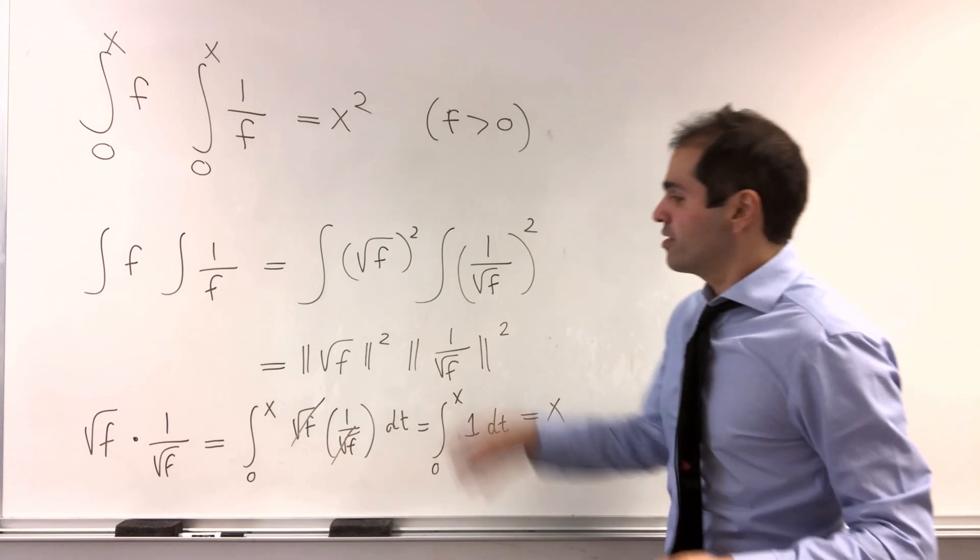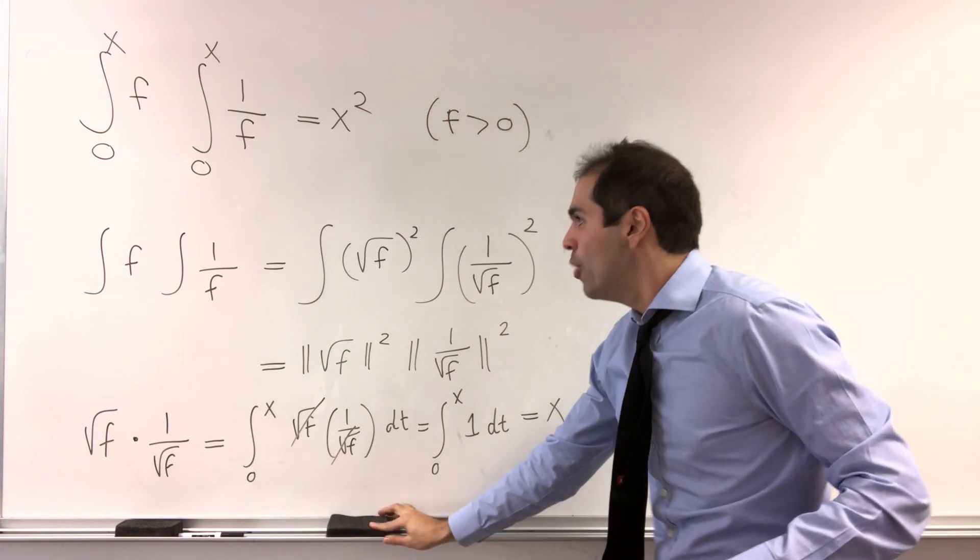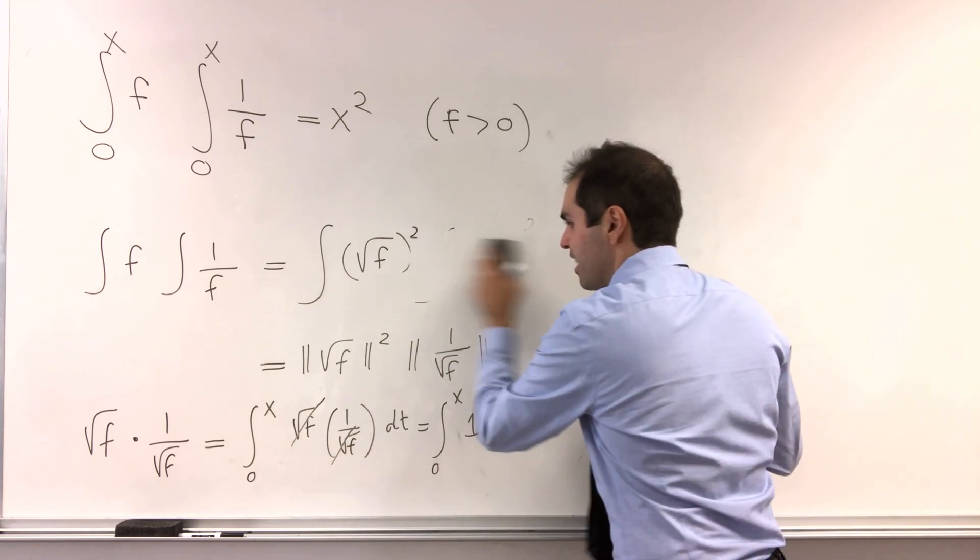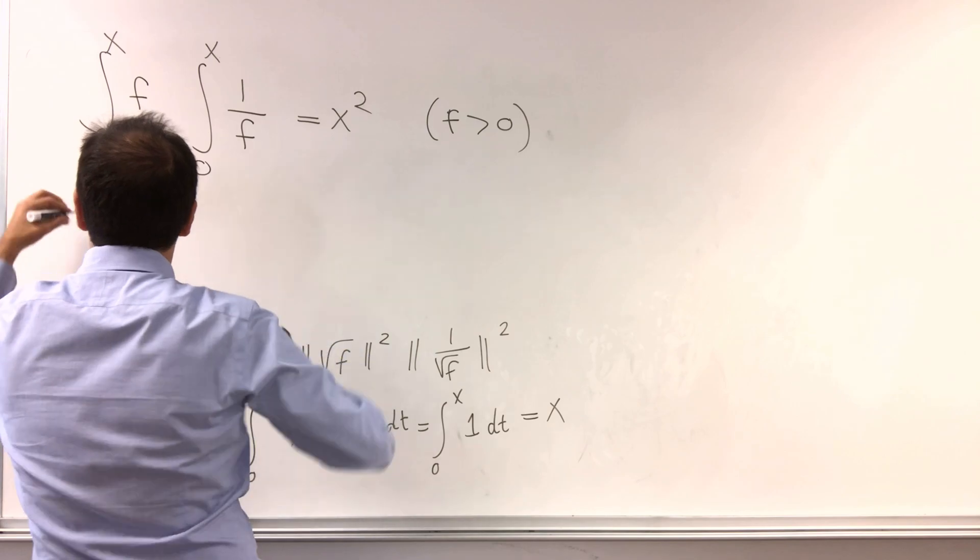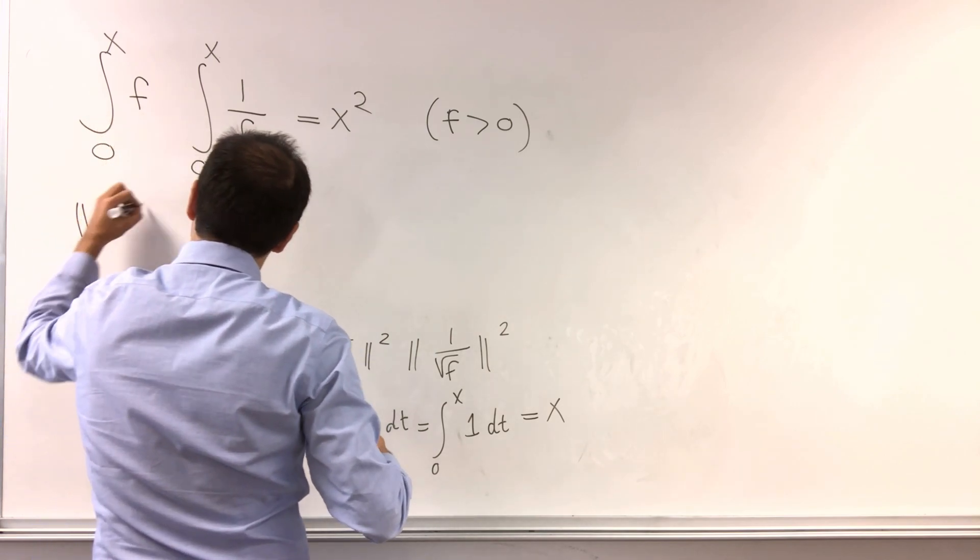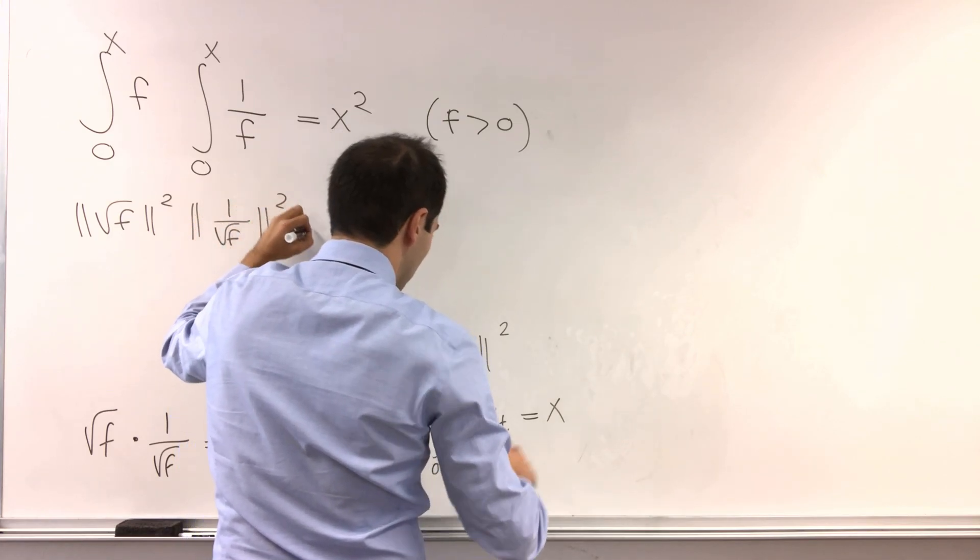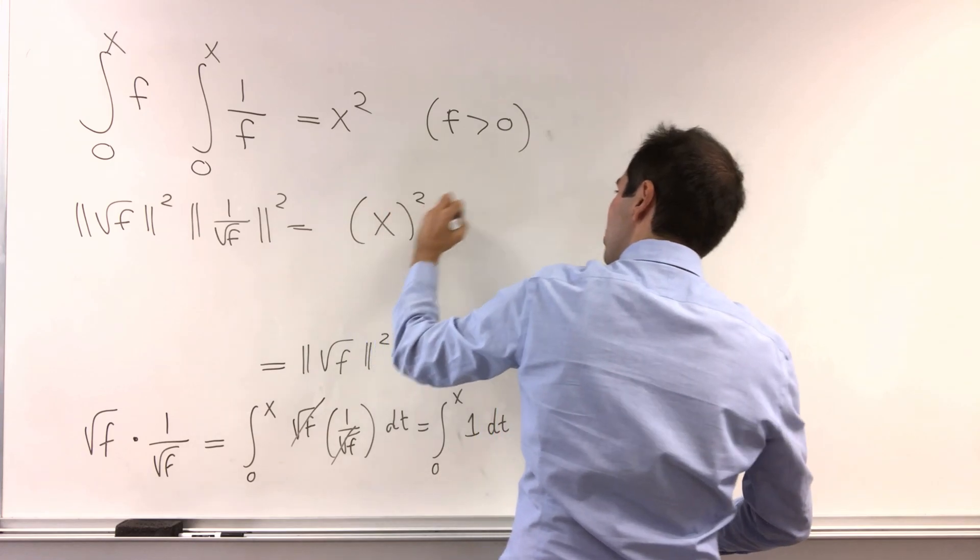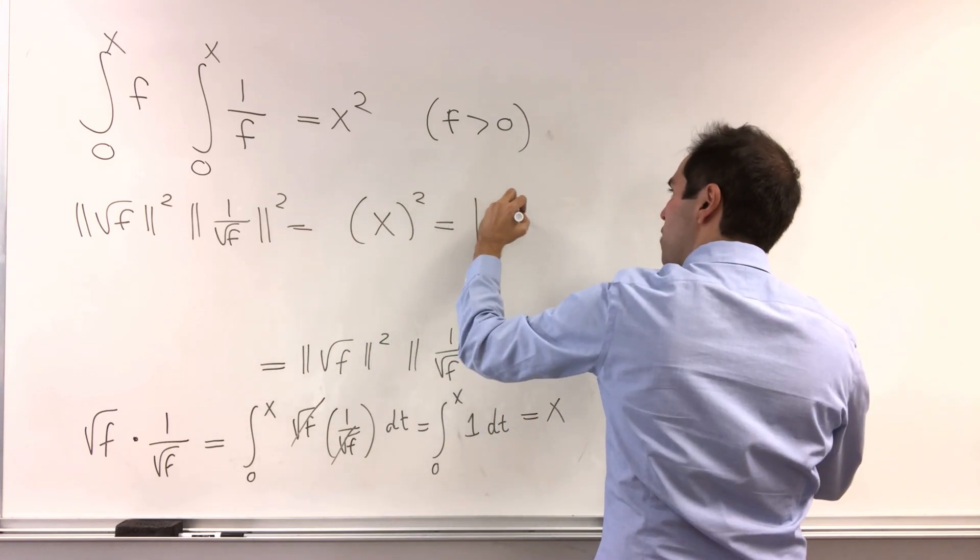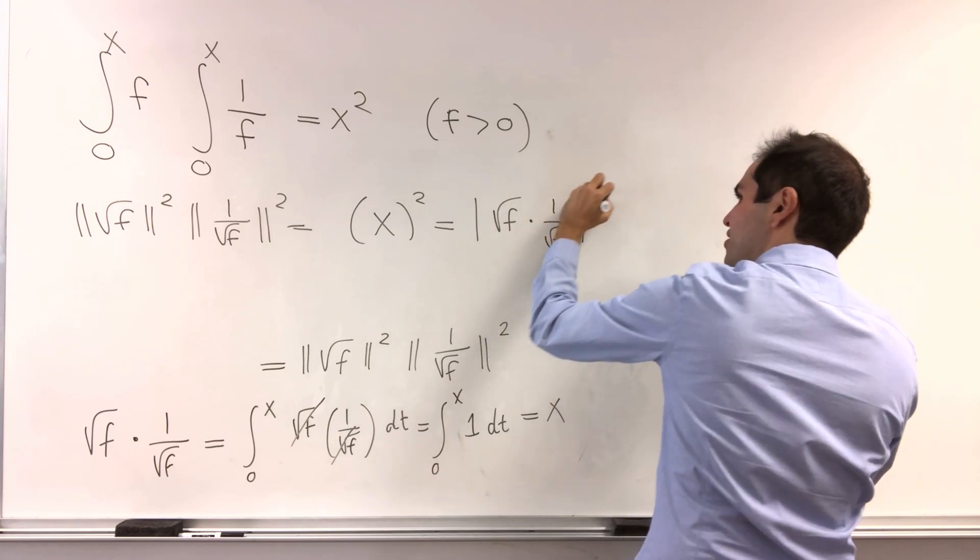In other words, what does this integral equation say? Well, it simply says that the length of square root of f squared times the length of 1 over square root of f squared is literally x squared, so the absolute value of square root of f dotted with 1 over square root of f squared.